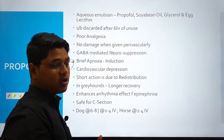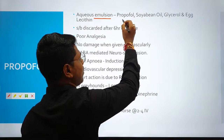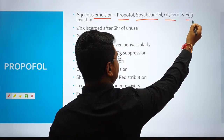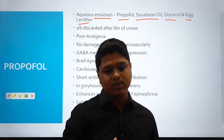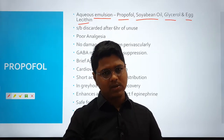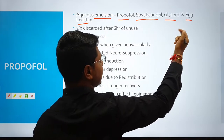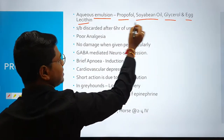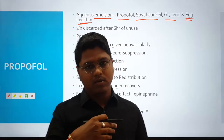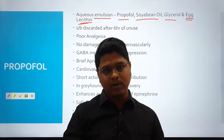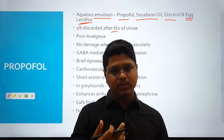Propofol comes as an emulsion. In this emulsion you will find propofol, soybean oil, glycerol and egg lecithin. The presence of egg lecithin sometimes may cause allergic reactions in some dogs, but not all dogs — very few. Another thing: due to the presence of egg lecithin, it is prone to bacterial contamination. So if you are using a vial and there is unused propofol, you can store it for up to only six hours.